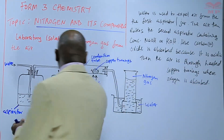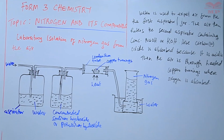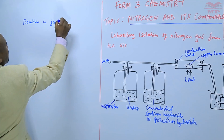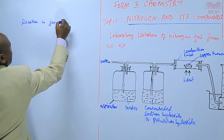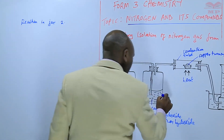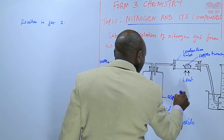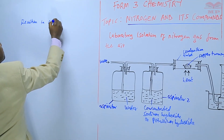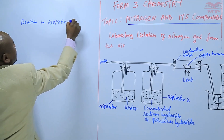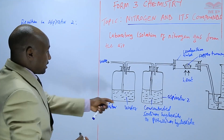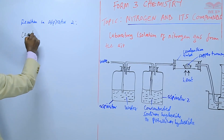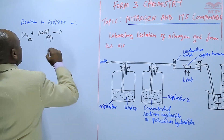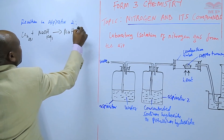The air is then passed through heated copper turnings where oxygen is absorbed. The reaction in aspirator two: carbon dioxide gas combined with concentrated sodium hydroxide solution forms sodium hydrogen carbonate solution. If potassium hydroxide is used instead — because we are saying we can use either — then we will form potassium hydrogen carbonate solution.